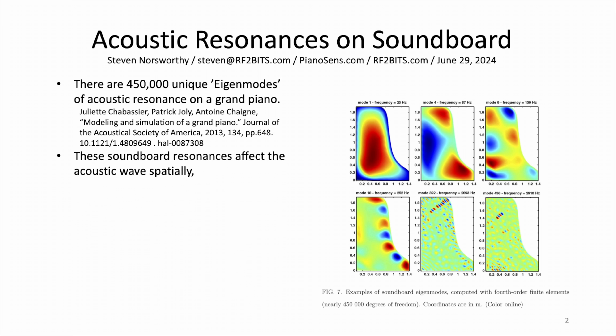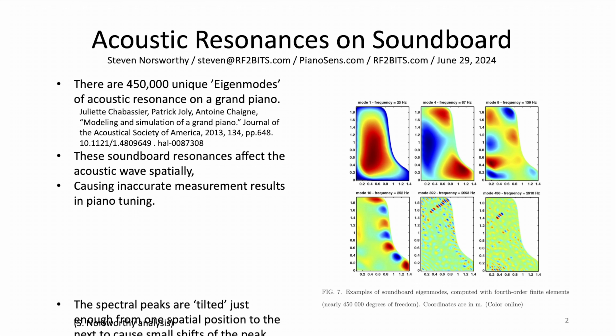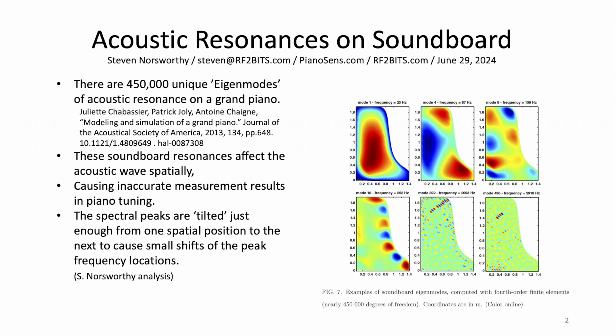These soundboard resonances affect acoustic waves spatially, causing inaccurate measurements in piano tuning. The spectral peaks are tilted just enough from one spatial position to the next to cause small shifts of the peak frequency locations. That's my analysis after reading this article — I did this experiment.